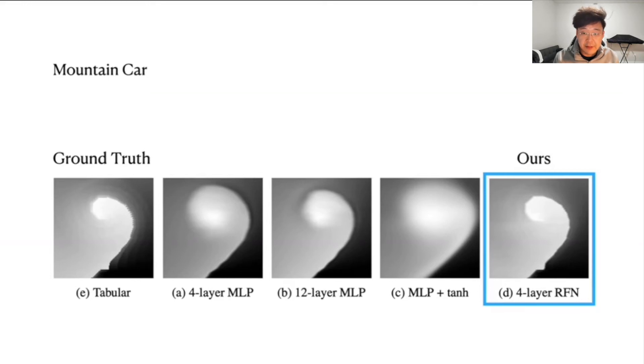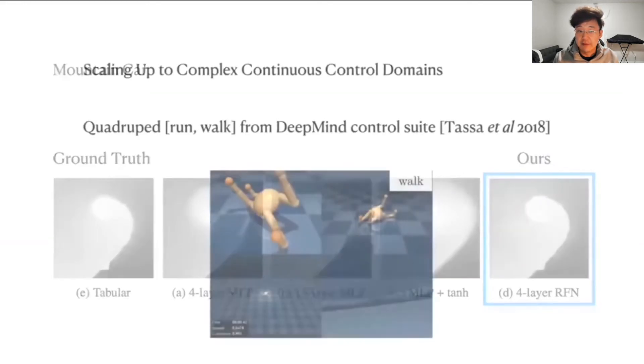Fourier feature networks, our method, on the other hand, provide a sharp approximation that recovers all of the fine details.